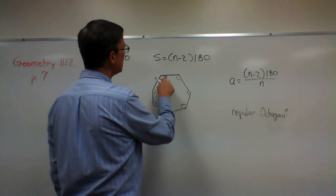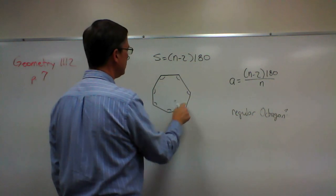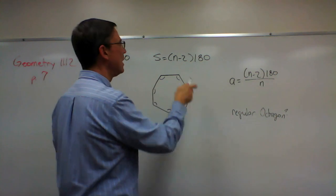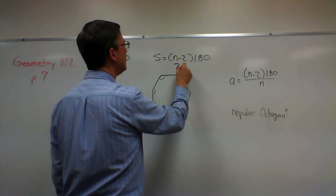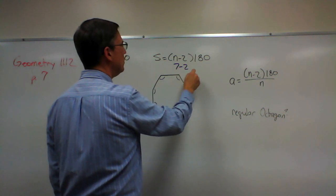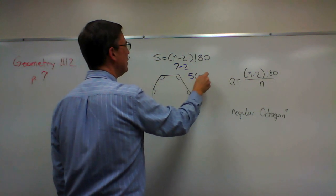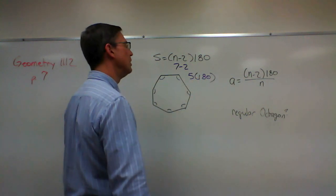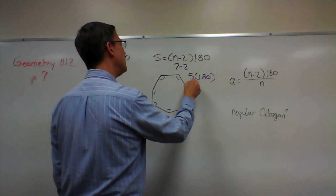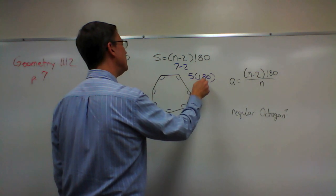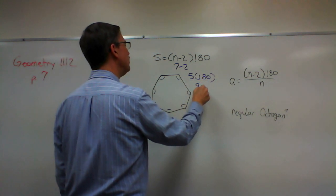If we somehow knew how many degrees each angle was and added them all up, it's actually very easy to figure out. If this shape has seven sides, then I would take 7 minus 2, which is 5, and take 5 times 180 — that gives us 900 degrees.